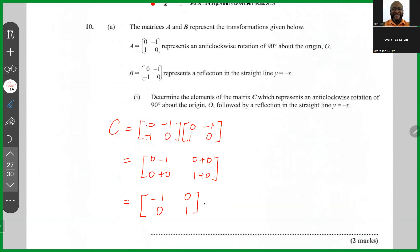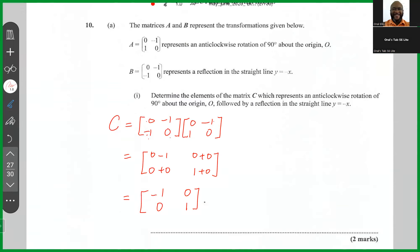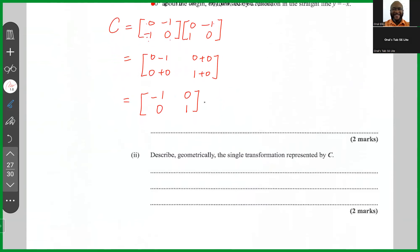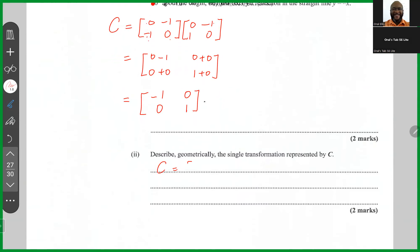We're asked to describe geometrically the single transformation represented by C. So this is something that you guys should know, that C, this transformation here, which is minus 1, 0, 0, 1, what C does is that it changes the sign of the x-coordinate. So if you multiply C by x, y, it's going to become minus x, y. And the transformation that does that is a reflection in the y-axis. So C is a reflection in the y-axis.